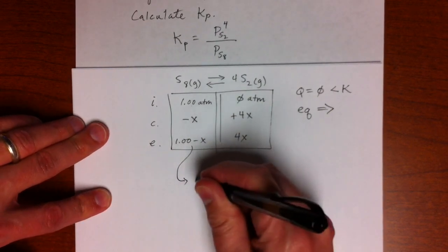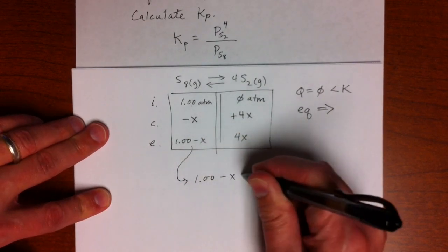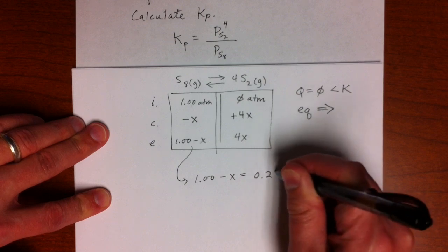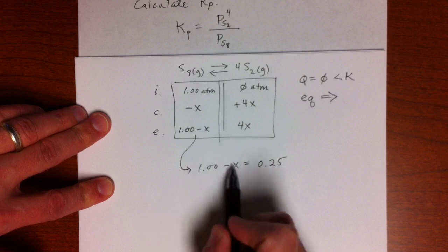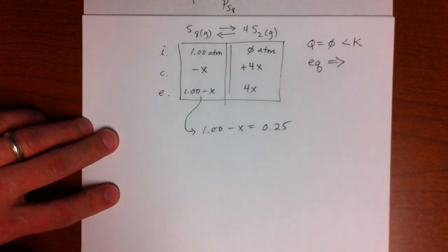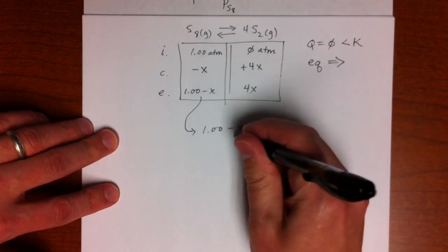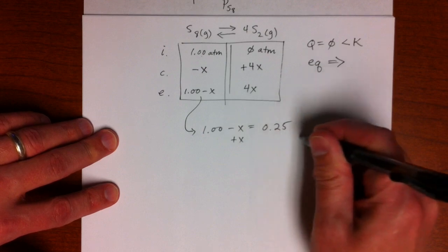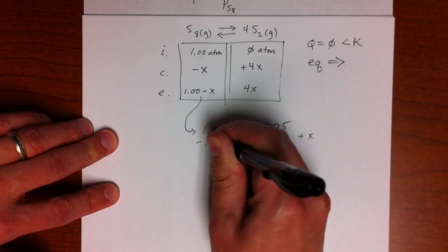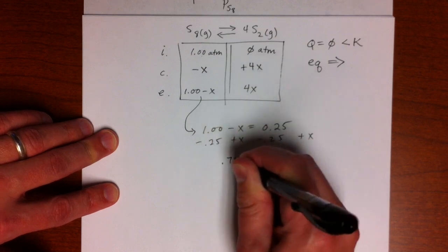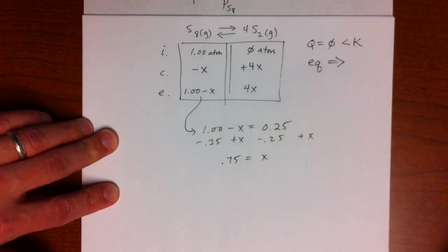So we can take this out and make it equal to 0.25. So we know from this what the equilibrium pressure is. So that's how we get X here. So it looks like I have to add X and subtract 0.25. So we get 0.75 equals X. That's the change.